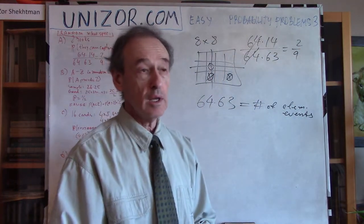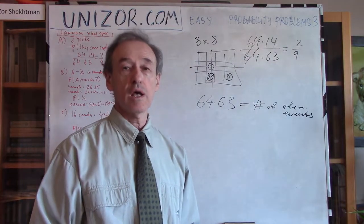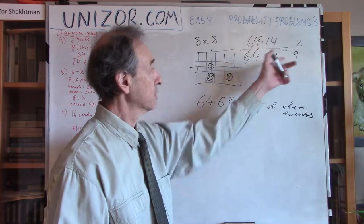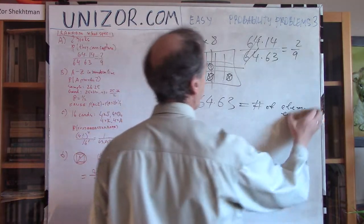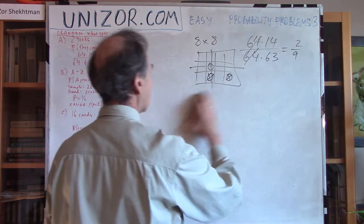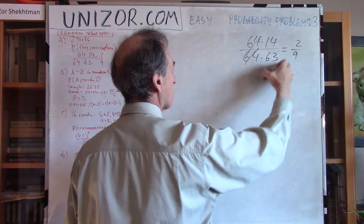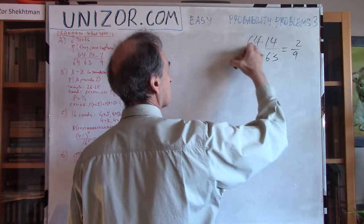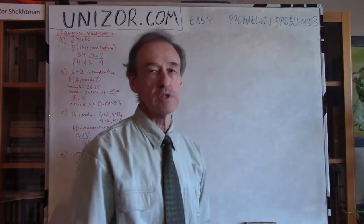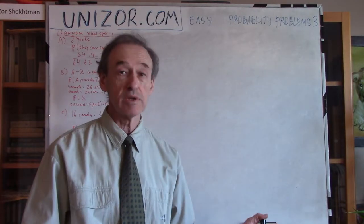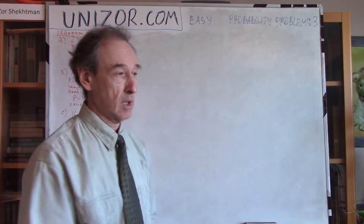I want to emphasize the classical approach here: total number of events in the denominator and number of good events in the numerator. That's what gives you the probability when probability is evenly distributed among all elementary events — which we stated from the very beginning.